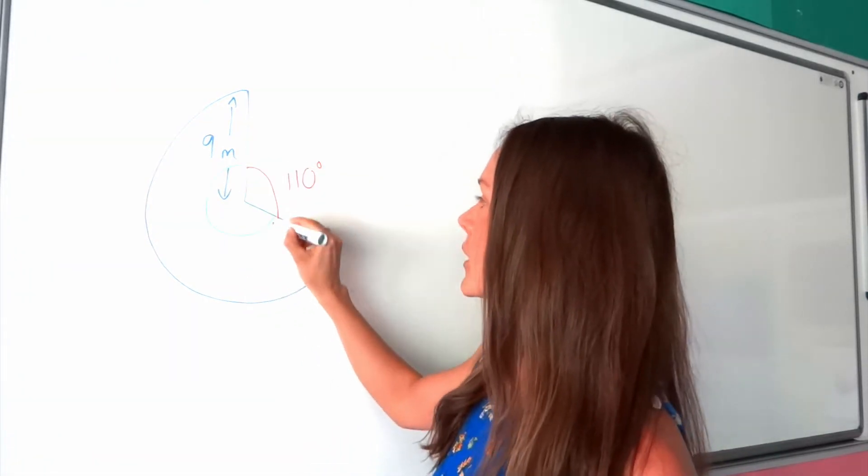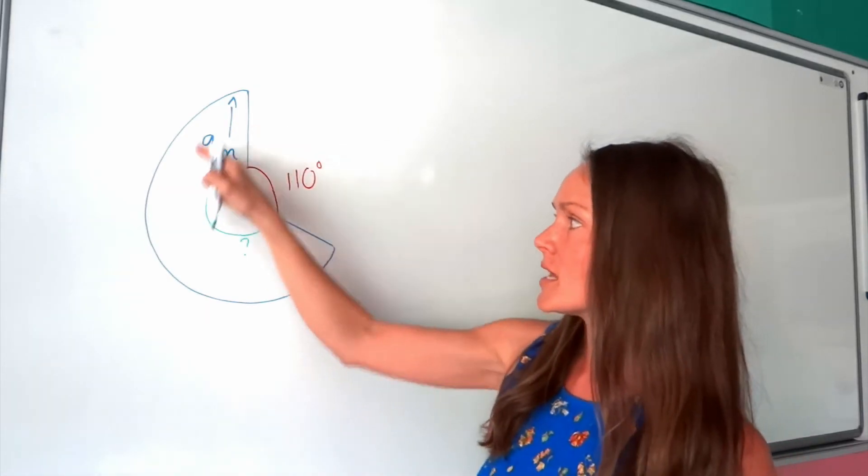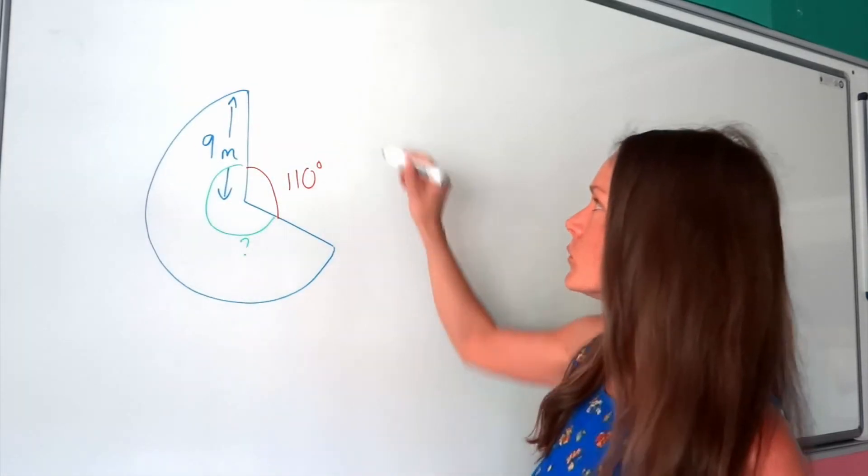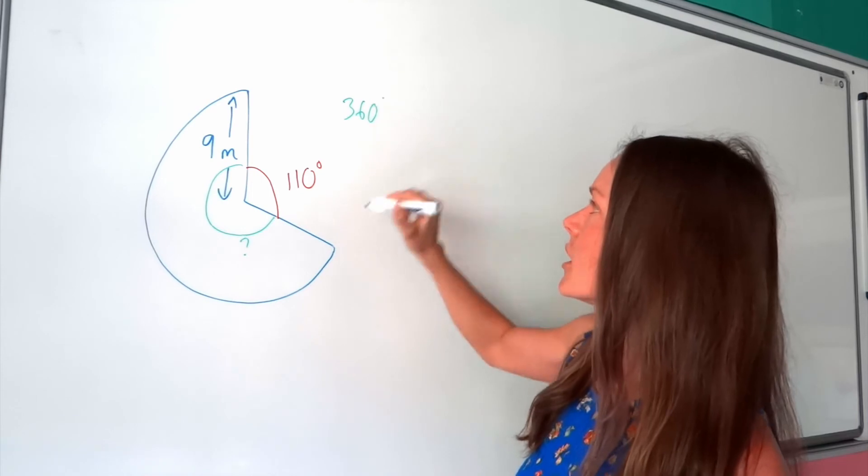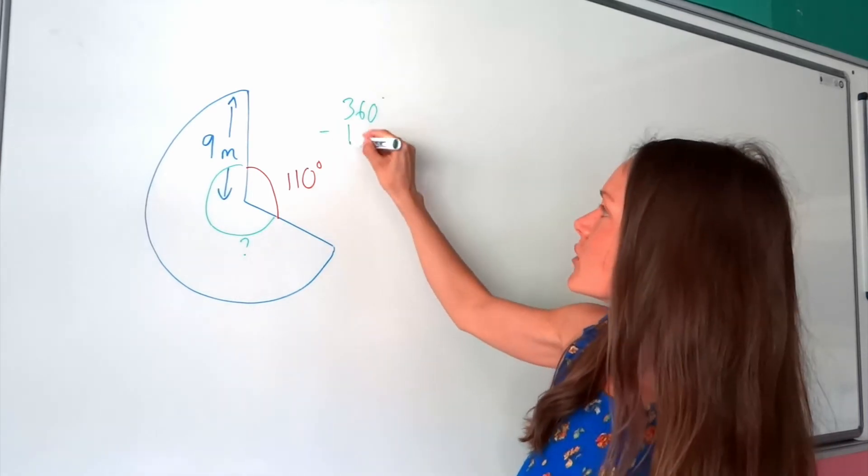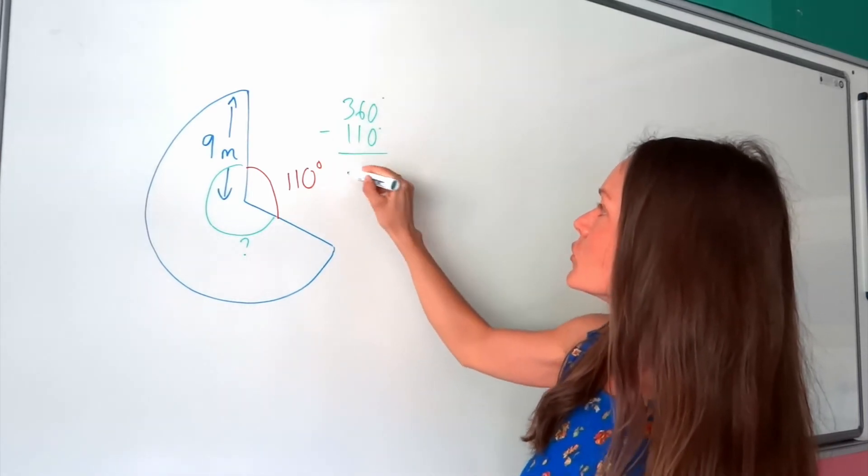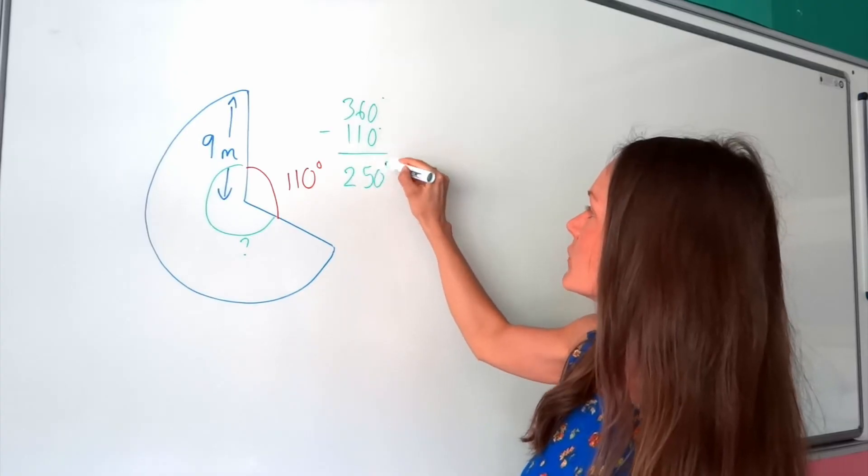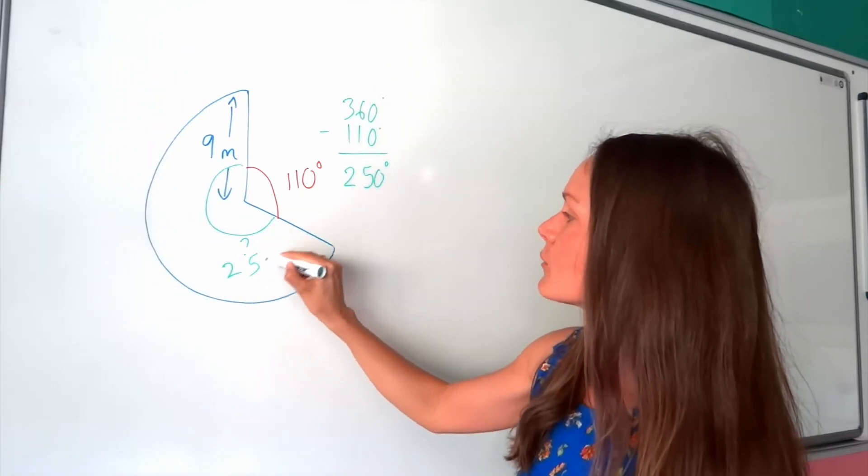So our first step is just to work out how many degrees we've got here. So in a full circle, you've got 360 degrees. So you need to minus those degrees that are outside to work out the number of degrees inside. So that's the first step.